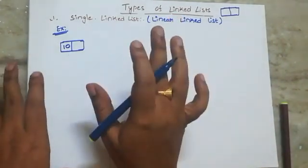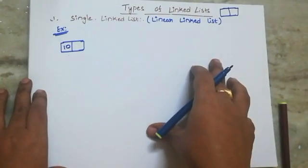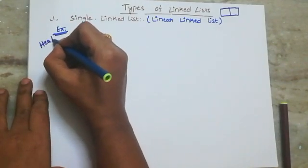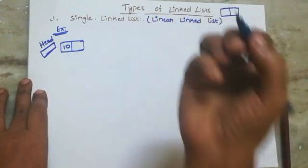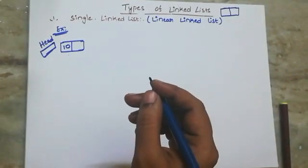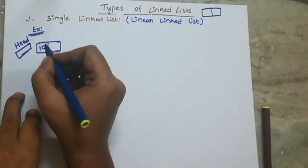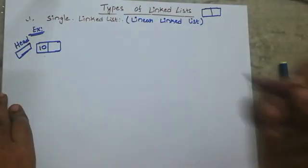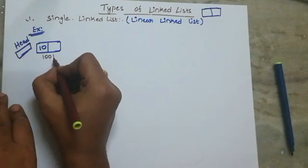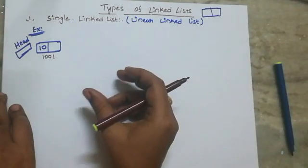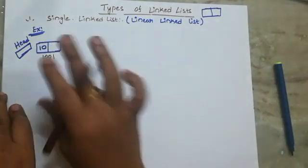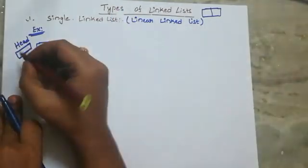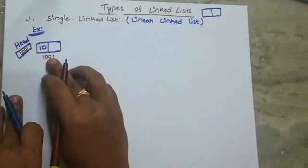I will store the number. Here I will only explain the concept. The main logic: every linked list has a header pointer. I will store the head pointer. The head pointer stores the first node address.